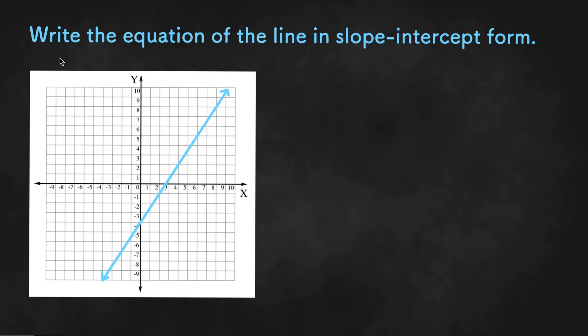So here we are asked to write the equation of the line in slope-intercept form. Slope-intercept form is y equals mx plus b. When we are writing equations in slope-intercept form, we need to know two things: we need to know m, or the slope, and we need to know b, or the y-intercept.